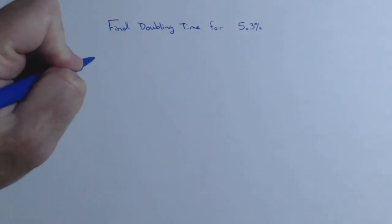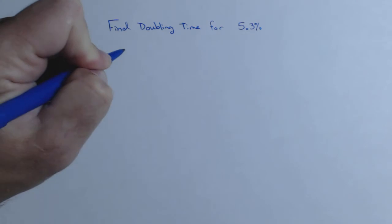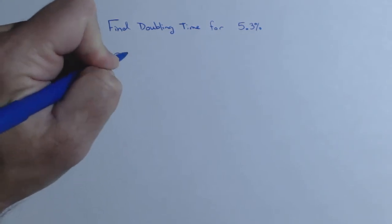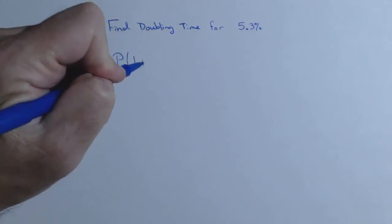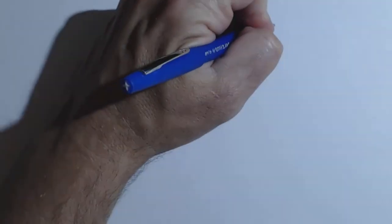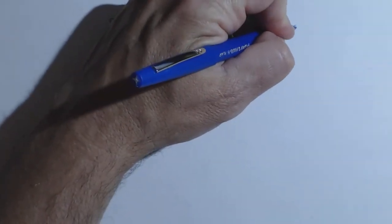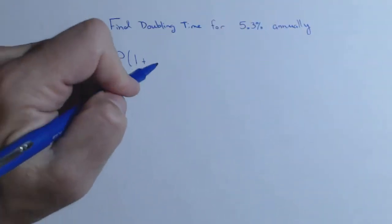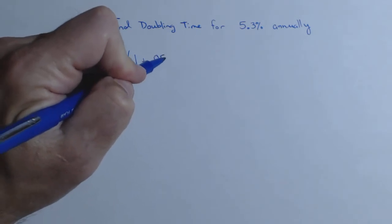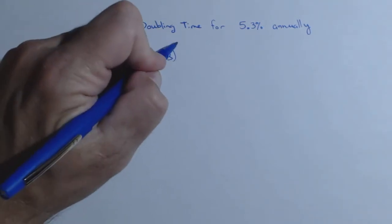So first thing we'll do is we'll set up some kind of general model. B equals principal times one plus, let's say 5.3 percent annually. So 1.053 to the t.